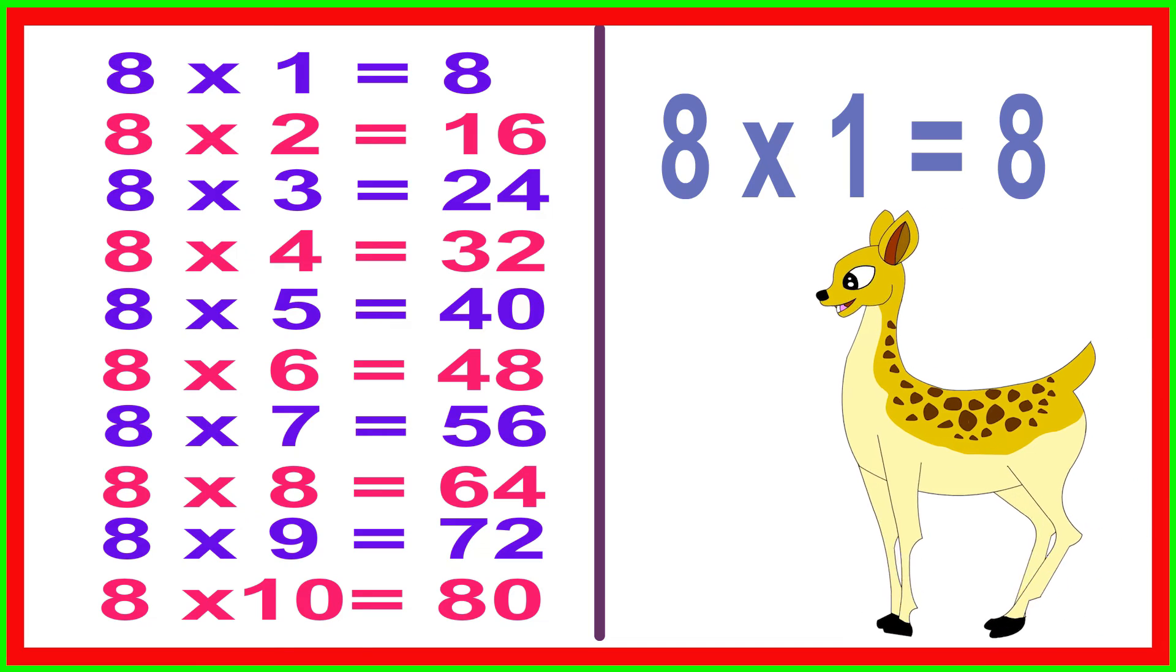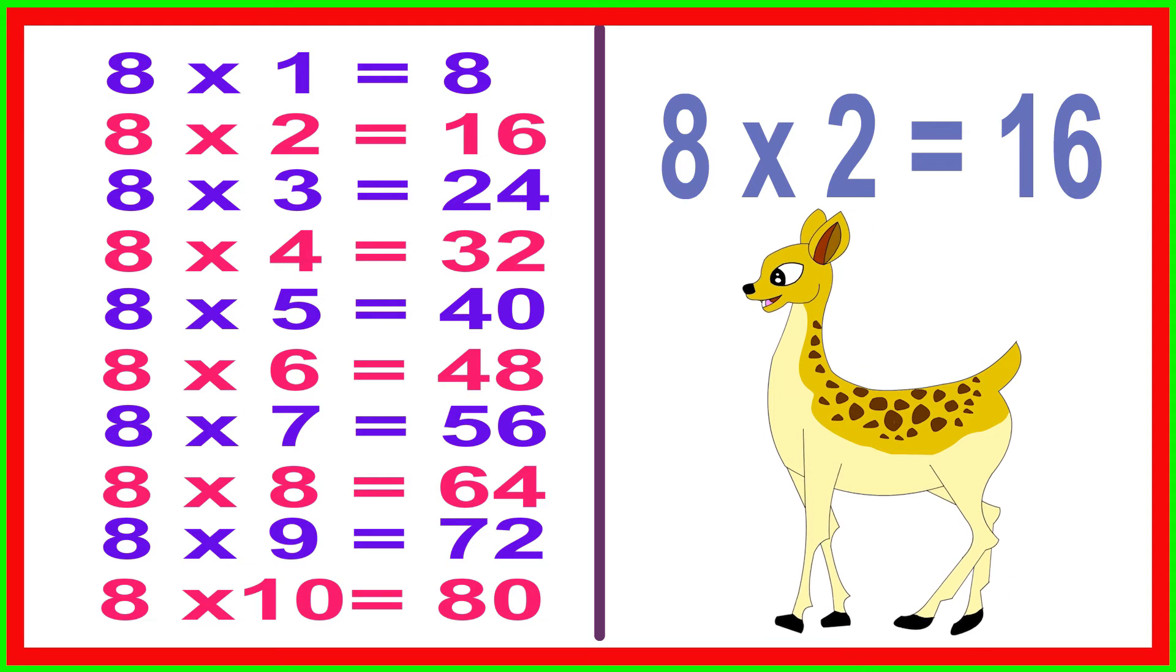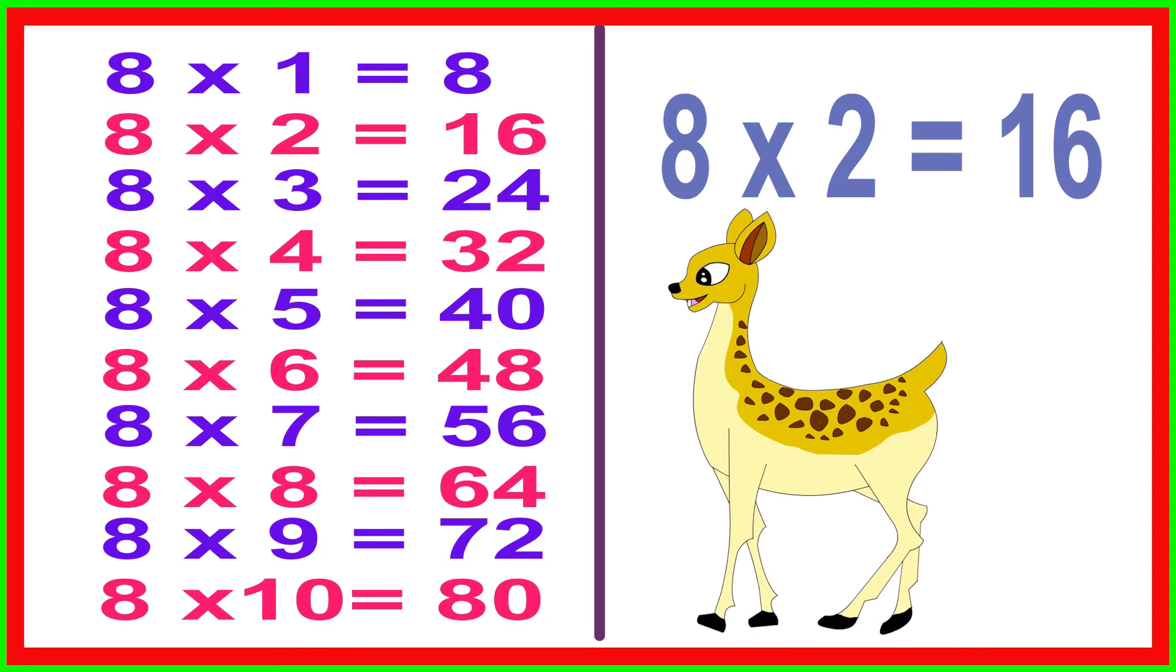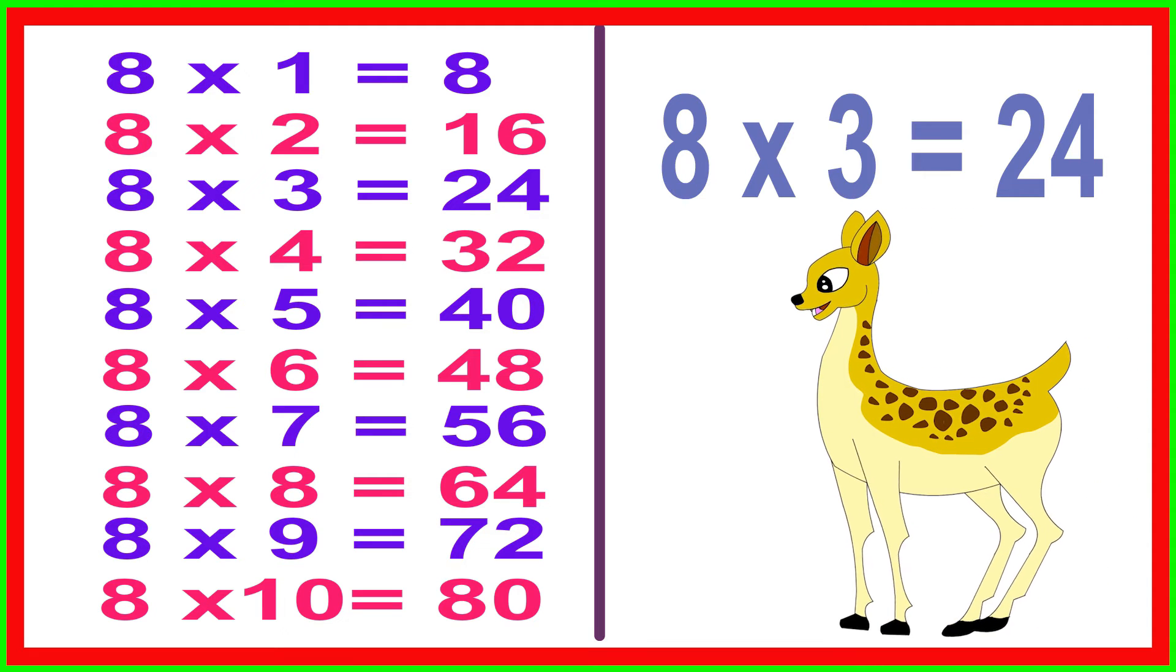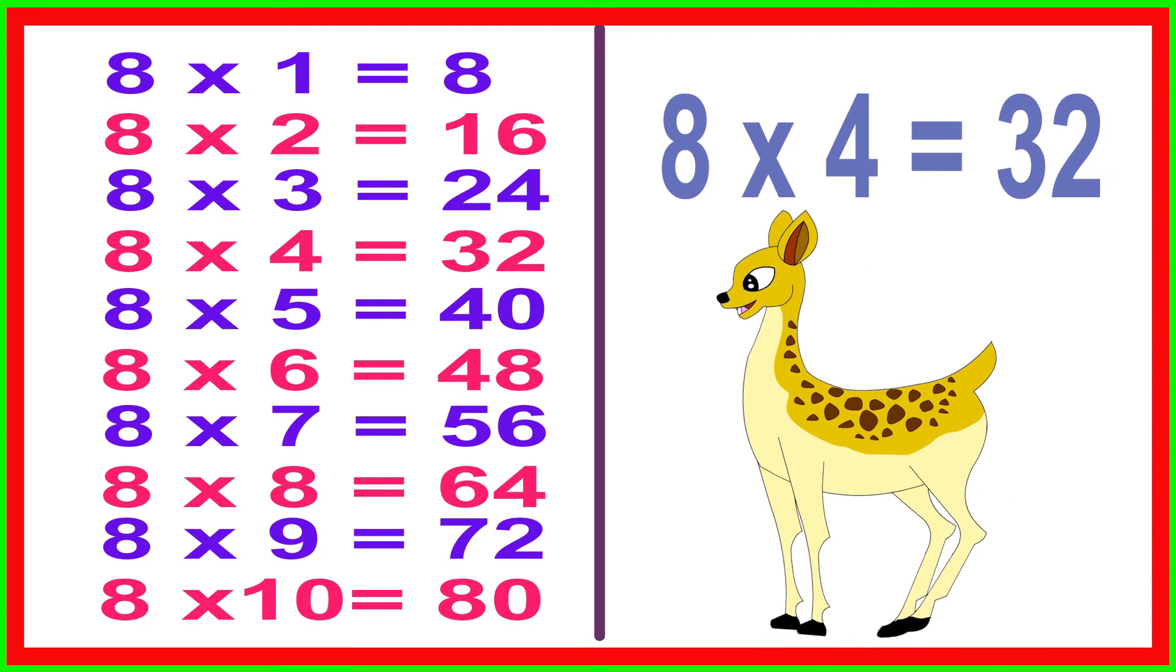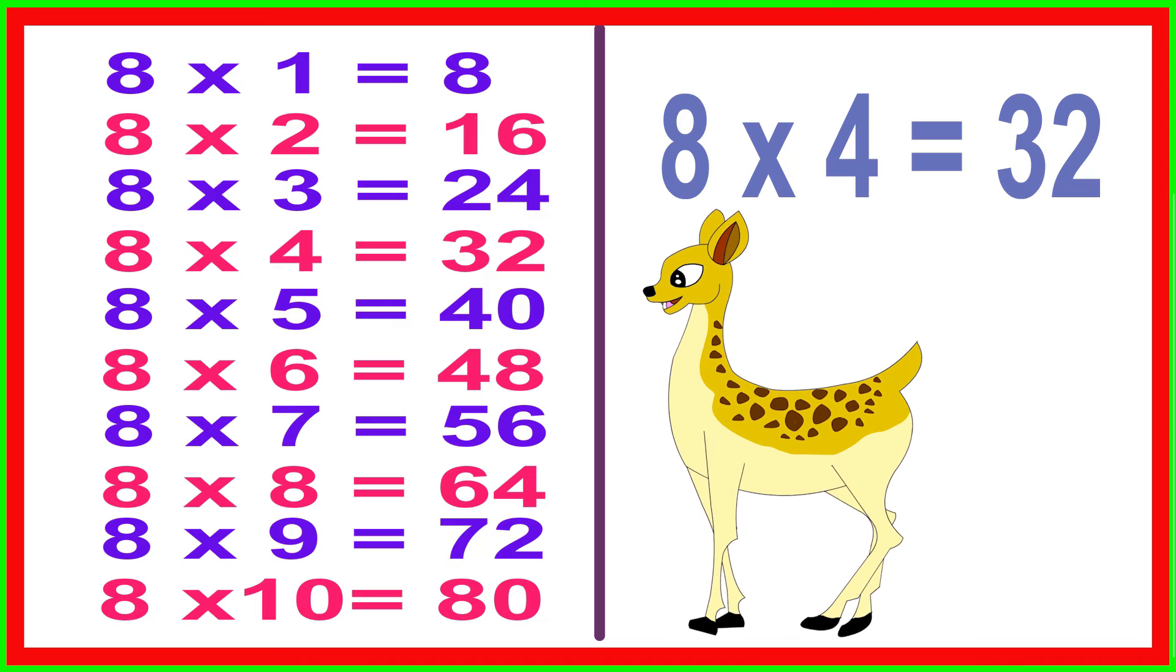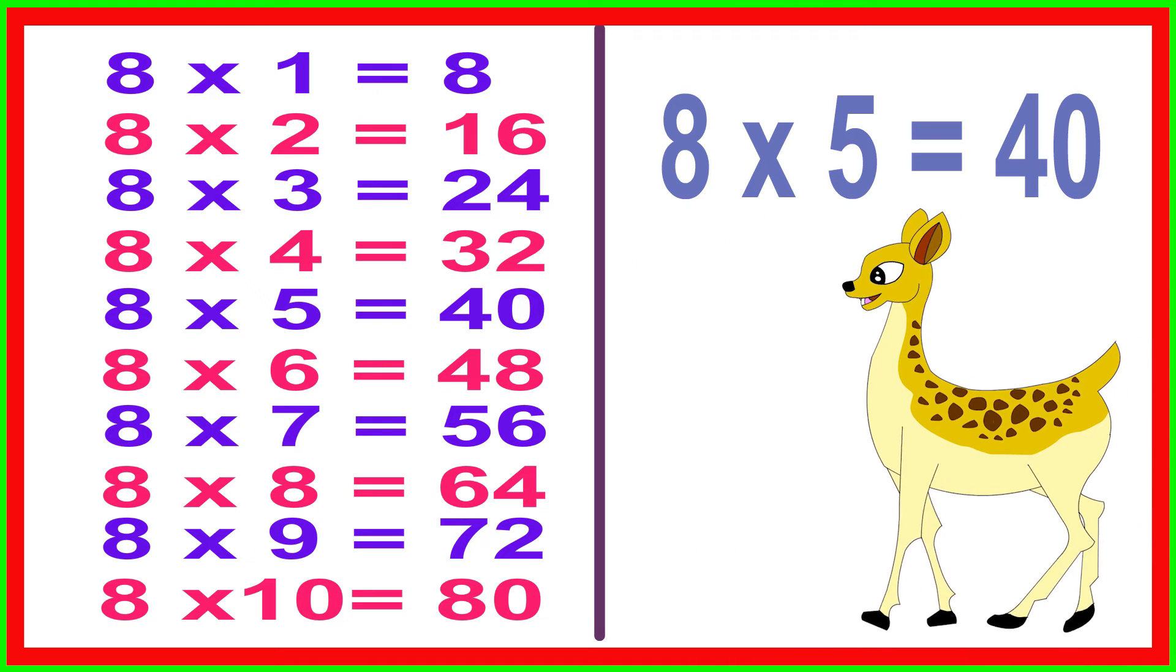8 times 1 equals 8, 8 times 2 equals 16, 8 times 3 equals 24, 8 times 4 equals 32, 8 times 5 equals 40.